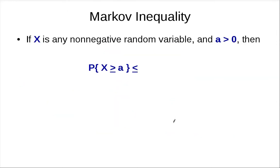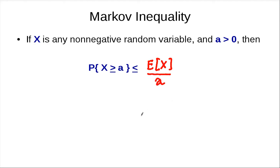Let me state the Markov inequality — you can try to prove it yourself before continuing. The Markov inequality states that if X is a non-negative random variable and a is greater than 0, then the probability that X is larger than a is at most E[X] / a. If the expected value of X is small, the probability is small; and the probability decreases inversely with a.